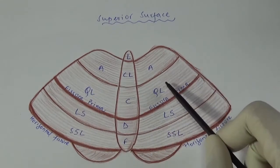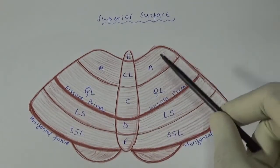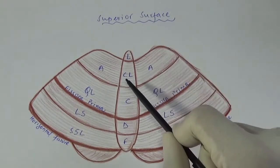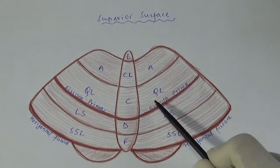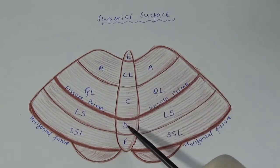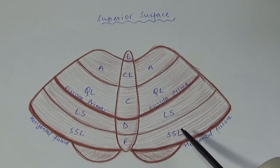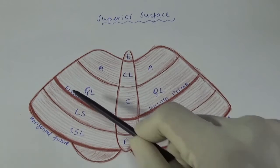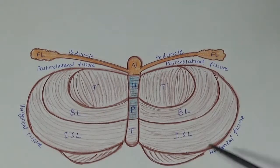Looking at this diagram of the superior surface, the vermis is subdivided into lingula, central lobule, culmen, declive, and folium. The corresponding cerebellar hemispheres are: no lateral area for the lingula; for the central lobule there is the ala; for the culmen, the quadrangular lobule; for the declive, the lobulus simplex; and for the folium, the superior semilunar lobule.